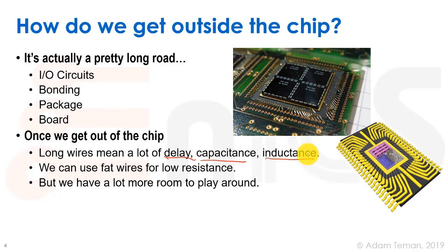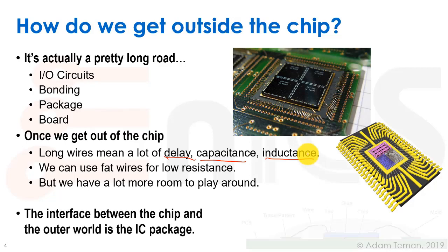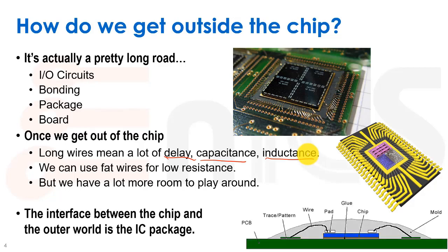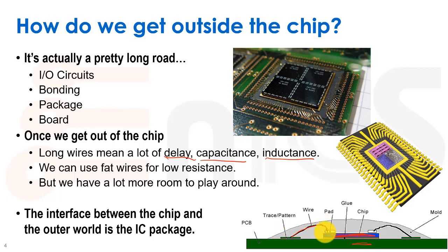One thing we can do is use fatter wires to get low resistance, and we have a lot more room to play with than inside the tight chip. The interface between the chip and the outer world is the IC package, where we have our piece of silicon connected to some sort of a substrate — a small green board — with bond wires and bonding pads, and probably some sort of mold that keeps everything in place.